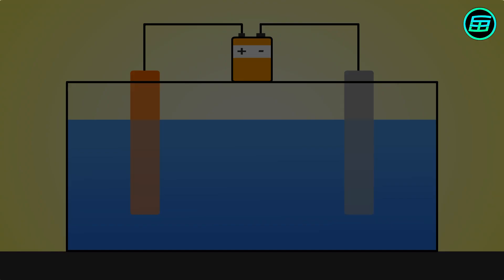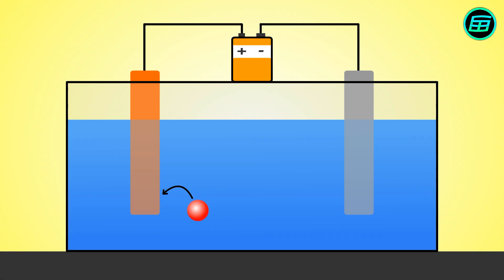The electrode where atoms give electrons is called the anode. The electrode where atoms gain electrons is called the cathode.